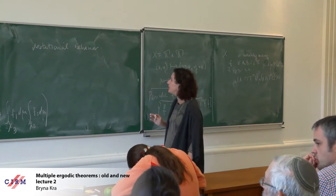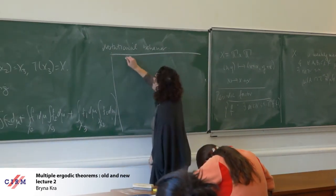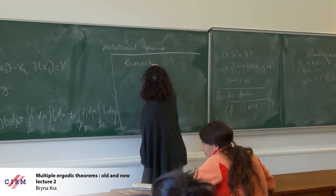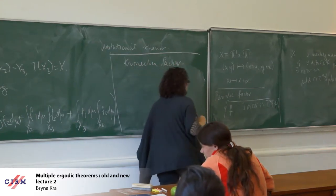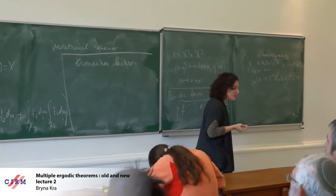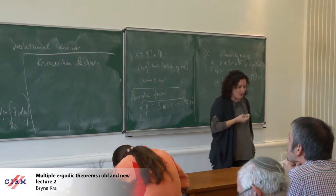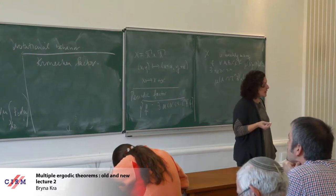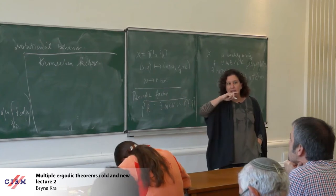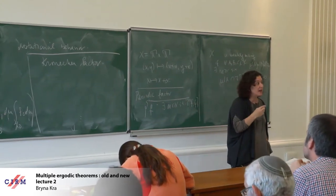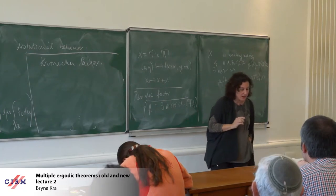Maybe now I should give a formal definition of the Kronecker factor. I could give the equivalent definition in terms of the eigenfunctions, as was done in the previous talk.